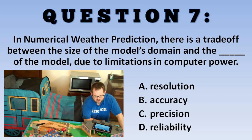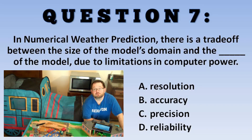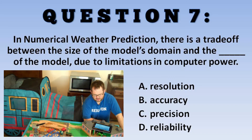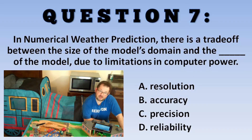Question seven: In numerical weather prediction, there is a trade-off between the size of a model's domain and the blank of the model, due to limitations in computer power. Is the limitation a trade-off with resolution, accuracy, precision, or reliability of the model? Choose from one of your four options below to get some feedback before we move on to question eight.